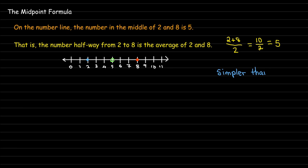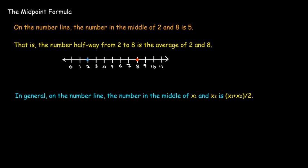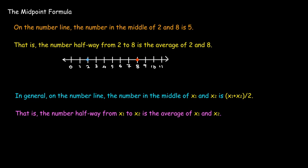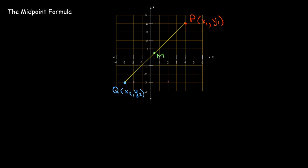The longer way would be: 8 minus 2 equals 6, half of 6 is 3, then 2 plus 3 equals 5. But that's longer, and especially when working with points in the plane, that would be very complicated. So we'd rather just work with the average of the two x-values: take x₁ plus x₂ and divide by 2.